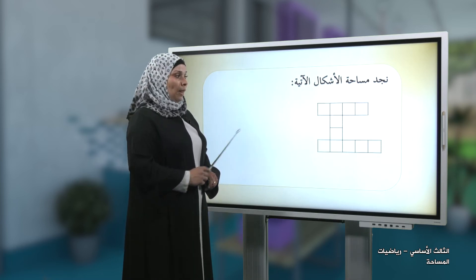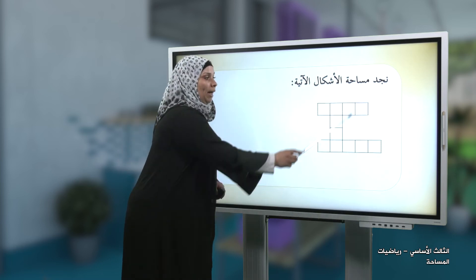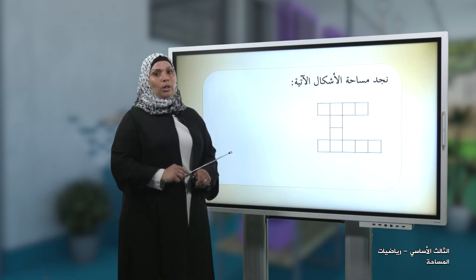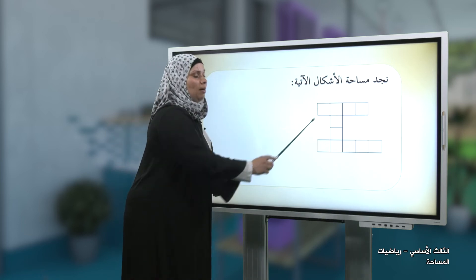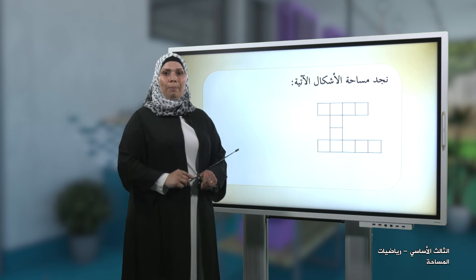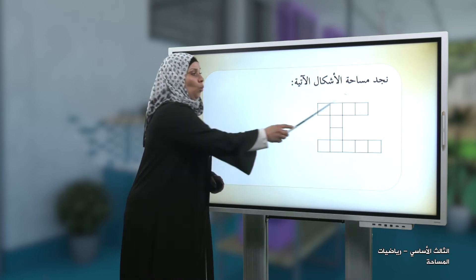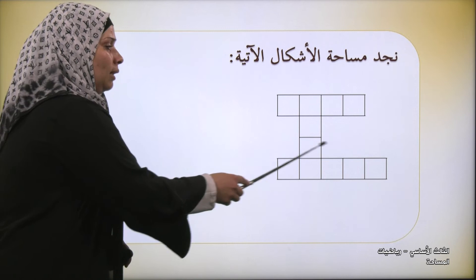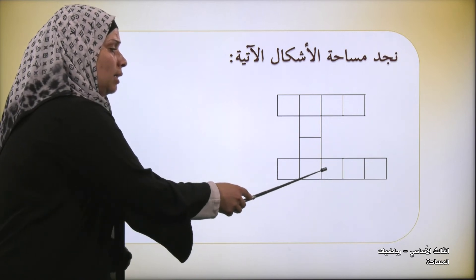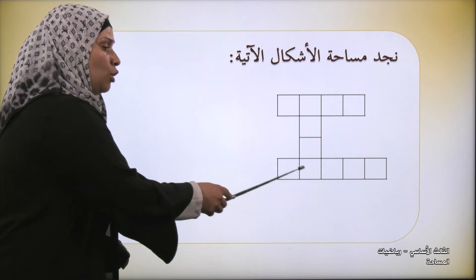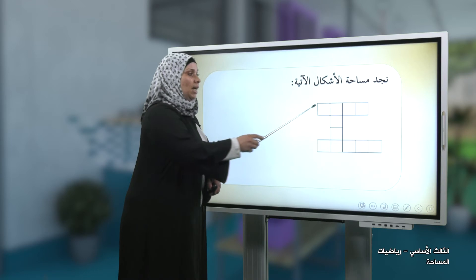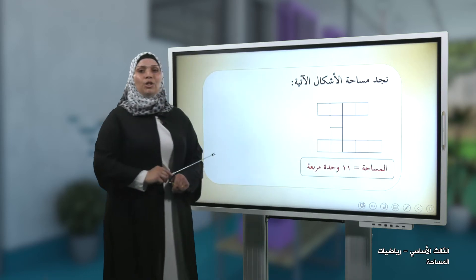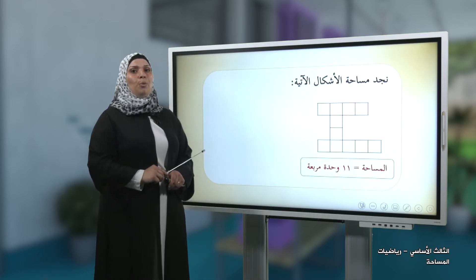ننتقل إلى سؤال جديد: نجد مساحة الأشكال الآتية. نقوم بعد الوحدات المربعة التي تغطي الشكل: واحد، اثنان، ثلاثة، أربعة، خمسة، ستة، سبعة، ثمانية، تسعة، عشرة، أحد عشر. إذن مساحة هذا الشكل الهندسي يساوي أحد عشر وحدة مربعة.